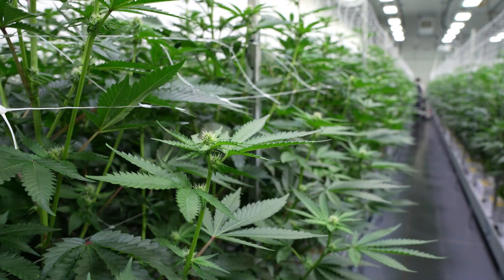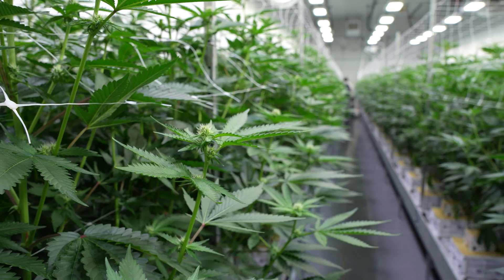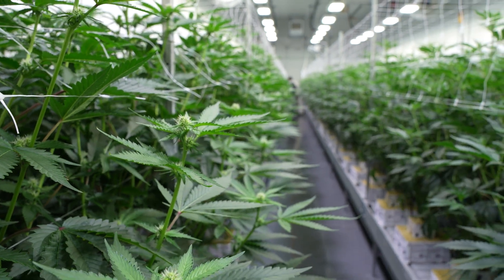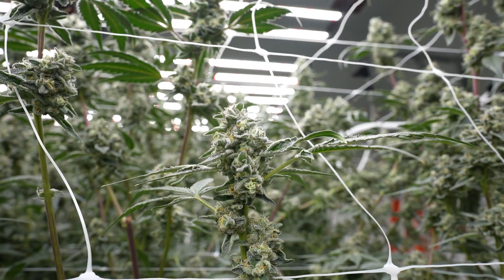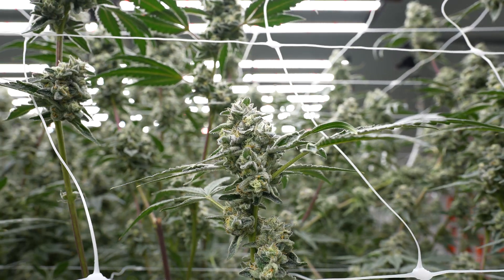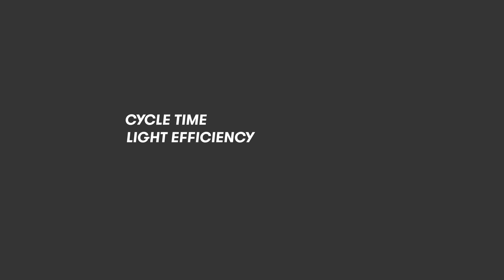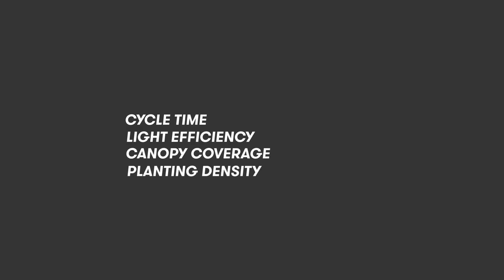While these metrics can give a quick snapshot of what's happening in your room, they don't take into consideration cycle time, light efficiency, canopy coverage, and planting density.